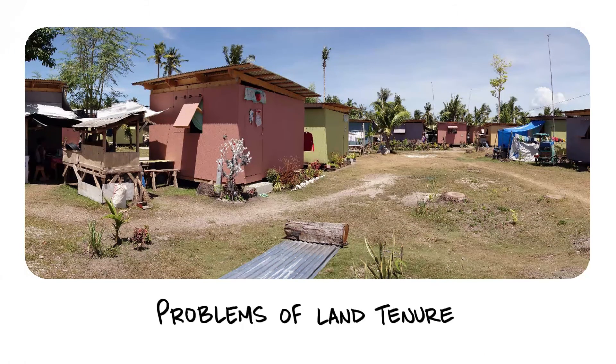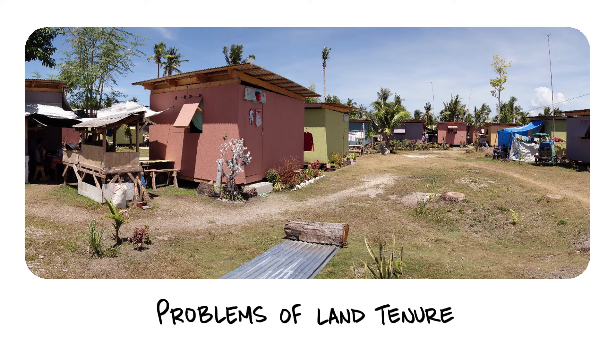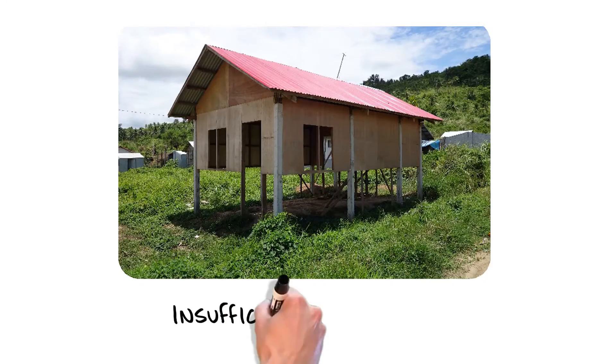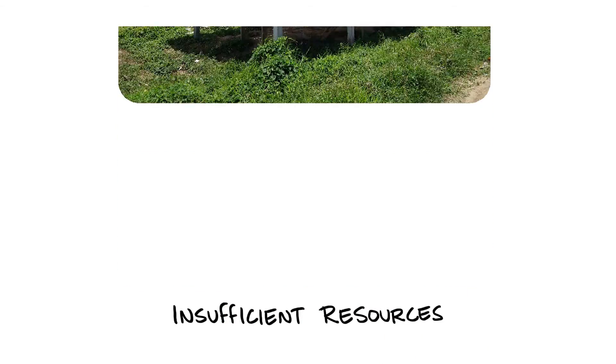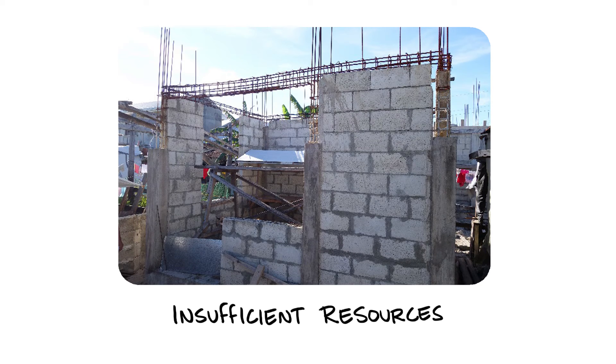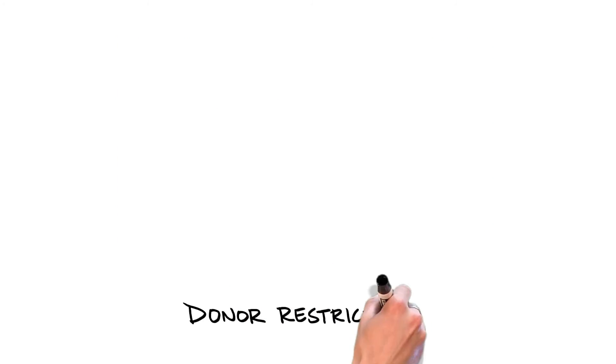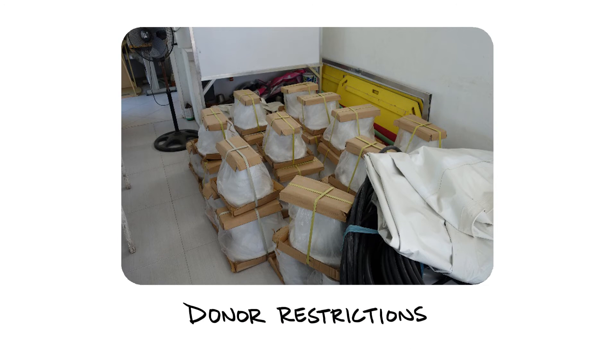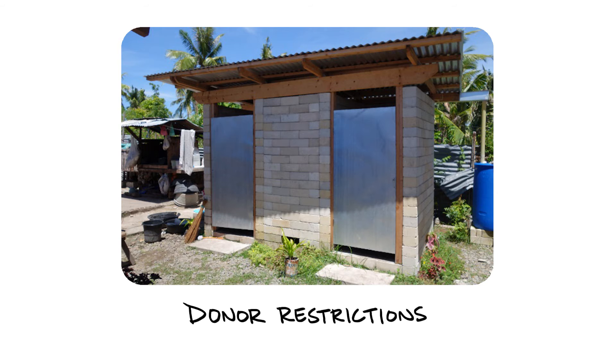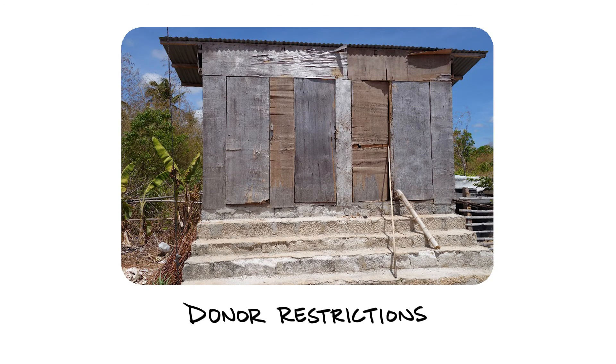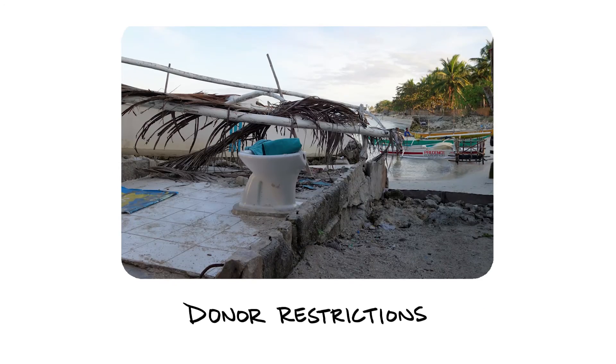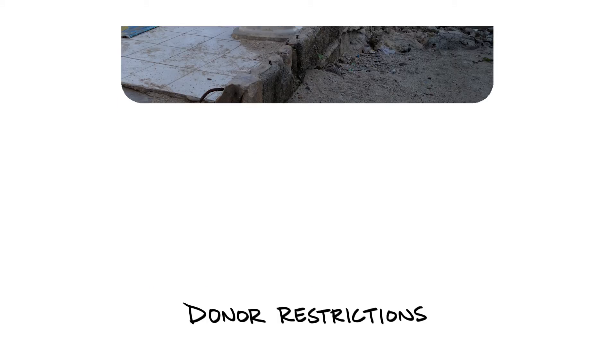Problems of land tenure, where people were in danger of being evicted from their new houses because the relief agency did not secure the proper land titles. Insufficient resources, where relief agencies simply ran out of money and materials to finish a housing project. Donor restrictions, like when donors specified that their money only be used for housing, which prohibited using the money for water and sanitation projects that were badly needed in the community.